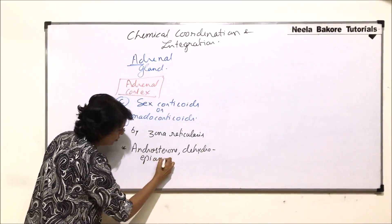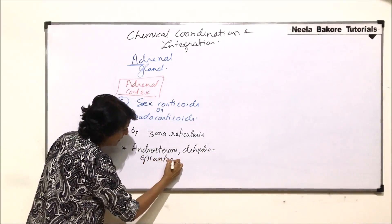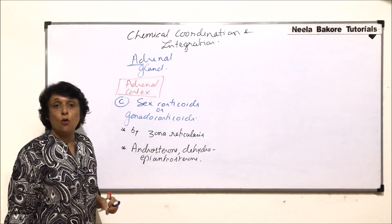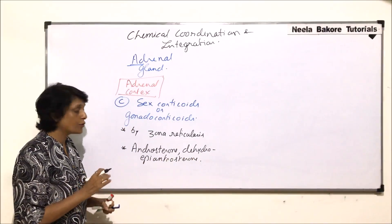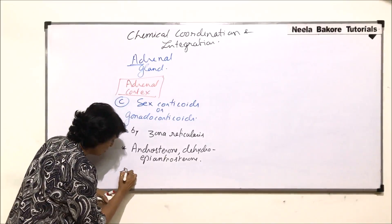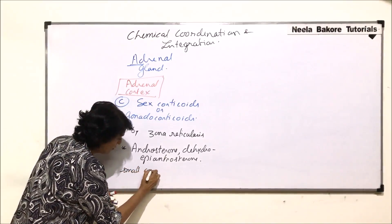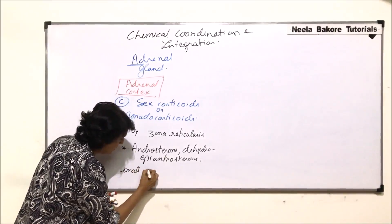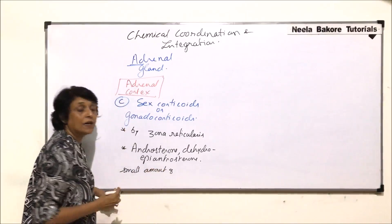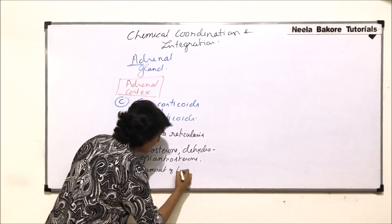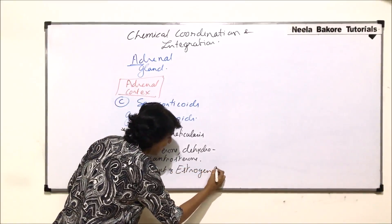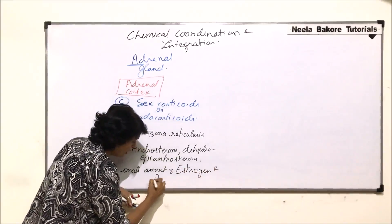The hormones included in this category are androsterone, dehydroepiandrosterone, and female sex hormones also, but in small quantity — small amounts of female sex hormones like estrogen and progesterone.